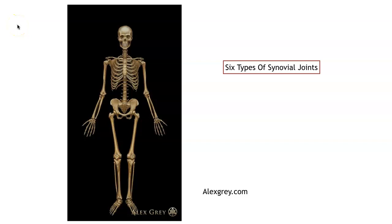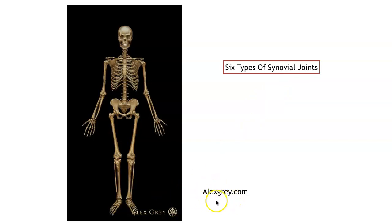Hello class. We are now going to be discussing our synovial joints — the joints that are diarthrotic joints. Diarthrotic means they are freely movable, and it is our synovial joints that are freely movable. I brought in a picture from alexgray.com — he's a great anatomy artist — and I'm going to be showing you a video from an artist website focusing on anatomy. It's one of the best videos I've seen on synovial joints.